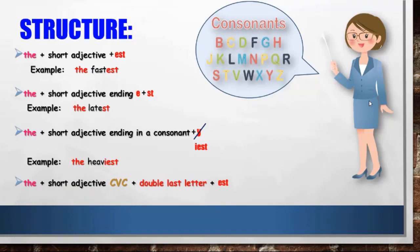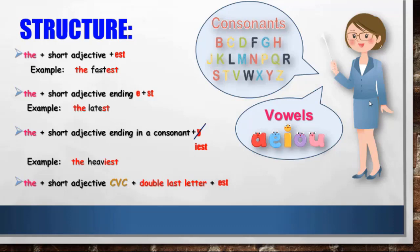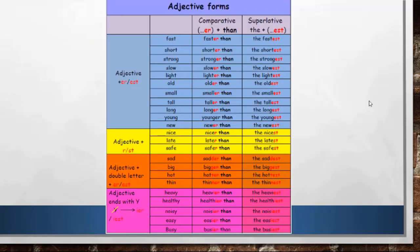Number four: if you have a CVC word — consonant, vowel, consonant — in the short adjective, you double the last letter before adding '-est'. Like 'the hottest': I doubled the last letter 'T' before adding '-EST'.